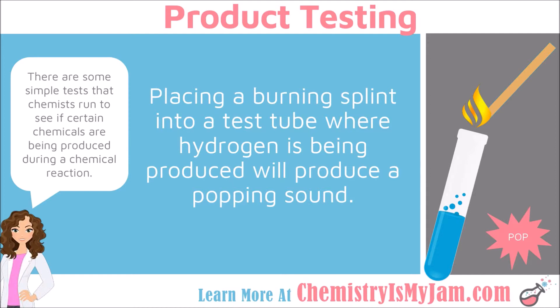The first gas is hydrogen. If a chemical reaction is being run in a test tube and hydrogen is being produced, you can take a burning splint — a piece of wood that you have lit on fire — and put it down into the test tube. If hydrogen is being produced, you will hear a very distinct popping sound, like a miniature explosion, because hydrogen is a flammable gas. It only happens once; it's a very quick, very distinct popping sound. The product test for hydrogen is to put a burning splint into a test tube and listen for a popping sound — the popping sound confirms that hydrogen is being produced.